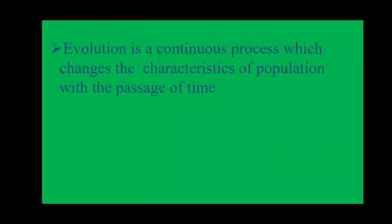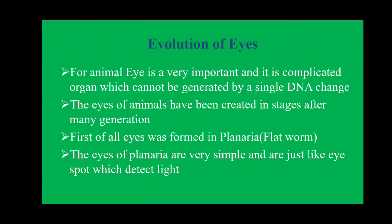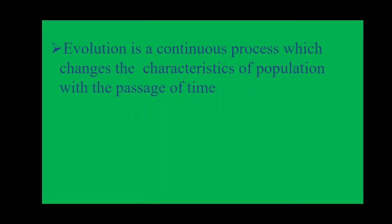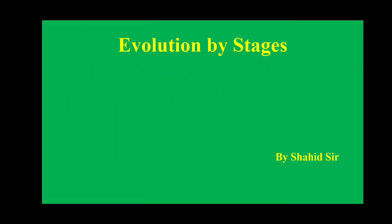For example, we can see the evolution of humans — it is said that humans evolved from monkeys. In this session we will discuss evolution and evolution by stages: how new organs are formed from primitive organisms, how they evolve into a complex body, and how new organs are formed in the next generation. Today's topic is evolution by stages.